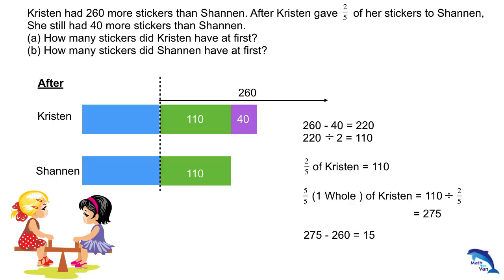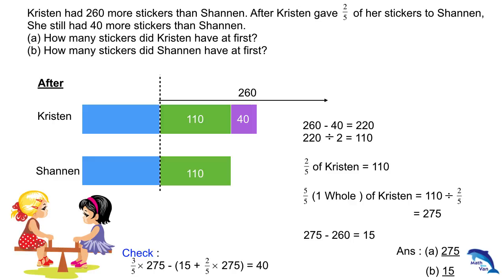Let's do a quick check with the use of the calculator. We know that in the end, three-fifths of Kristen's number of stickers were left. We can take three-fifths times 275, minus bracket 15 — that means the original number of stickers Shannon had plus the number of stickers given by Kristen — and that will give us 40, the difference of 40. So that's your answer: 275 and 15.